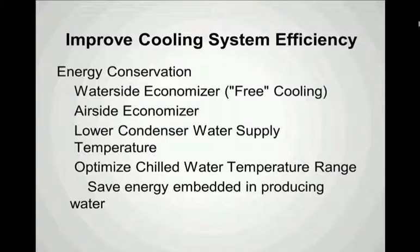A 1-degree drop in condenser water temperature represents an approximate 1 percent improvement in chiller efficiency, so we need to make sure we're operating the tower to maintain as low a condenser water temperature as is permissible by the chiller manufacturer. Also, optimizing the chilled water temperature range helps conserve energy by taking some of the load off the chiller, and by reducing our water consumption, we also save the energy that's embedded in producing the makeup water used in the cooling tower.